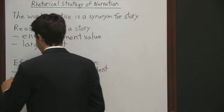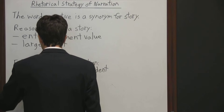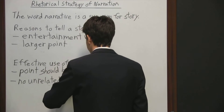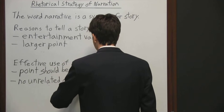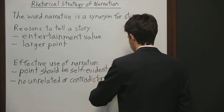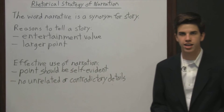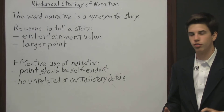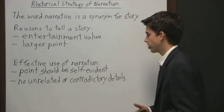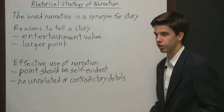A second key is the author shouldn't include any unrelated or contradictory details. Anytime the author uses unrelated or contradictory details, it undermines his or her own agenda. Those are a couple of things that you as a reader should be looking for to evaluate whether or not the writer used narration effectively.